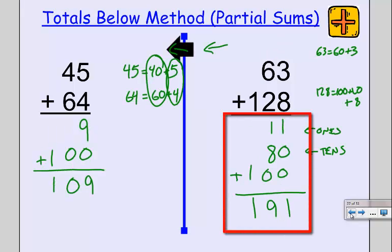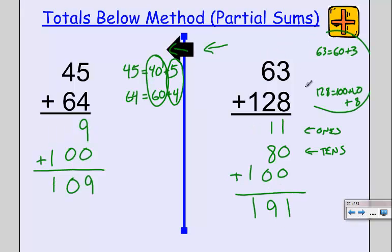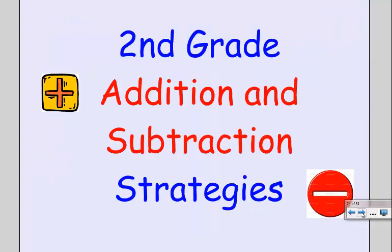Again, the same exact process we did in the previous problem, but we just went the other direction. Each way is appropriate, and we're just adding up pieces by place value. Again, the key is you've got to be able to know your numbers inside of numbers. And that's another way to add in second grade. Thank you.